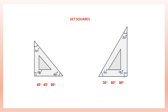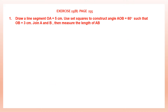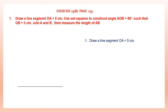Let's begin with question 1. Exercise 23b is on page number 235. The question says: draw a line segment OA equals 5 centimeters. So the first step is to draw a line segment OA, and using a ruler you measure 5 centimeters and draw this line segment. So we have OA equals 5 centimeters.